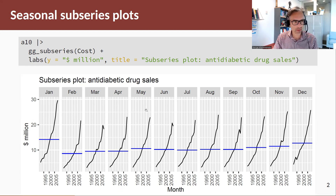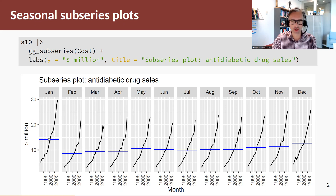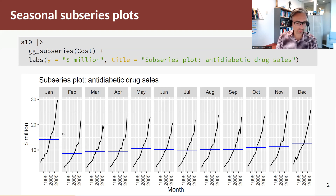In this case, I'm not sure that the sub-series plot is any more informative than the previous plots. To repeat some of the features we saw: there's an increasing trend in each of the months. The blue line shows the average value within that month — for example, the average January value. As we saw from the seasonal analysis, January is higher than February, which is lower than March. There's also a bit of an increase in December before the spike in January.